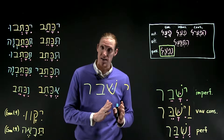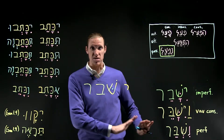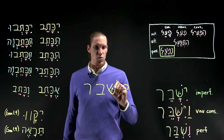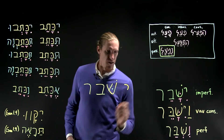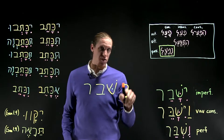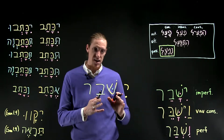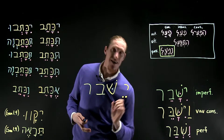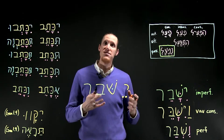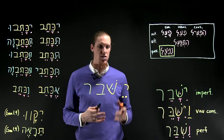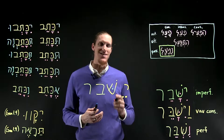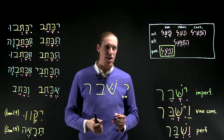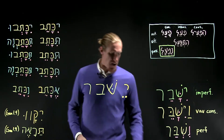Sometimes that first visible root letter is a guttural, in which case it rejects the dagesh forte — because the dagesh forte is the doubling dagesh — and says 'no thank you.' So what happens is that the vowel under the prefix would normally be a hiriq, but in this case the guttural causes compensatory lengthening, which we call 'tsere-izing' the hiriq: it makes the hiriq into a tsere. 'Tsere-izes the hiriq' — if that's helpful for you to remember it.